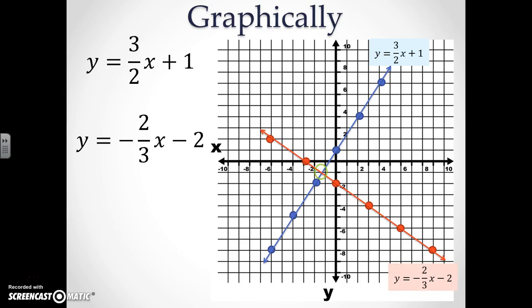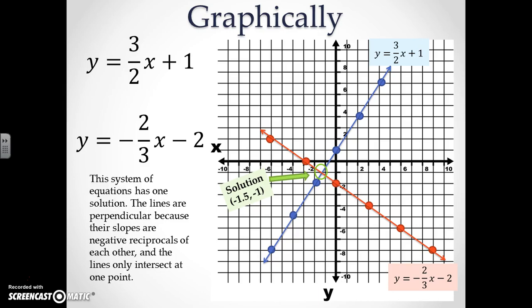Where the lines intersect is known as our solution. In this case, your solution is going to be the point negative 1 and a half comma negative 1. This system of equations only has one solution because, as stated before, your lines are perpendicular due to the fact that the slopes are negative reciprocals of each other and the lines only intersect at one point.